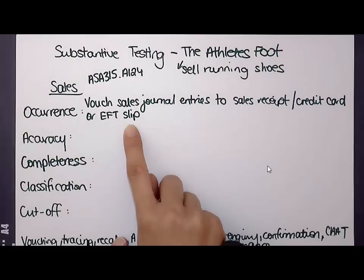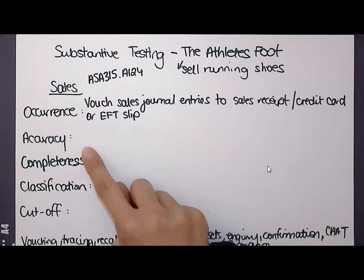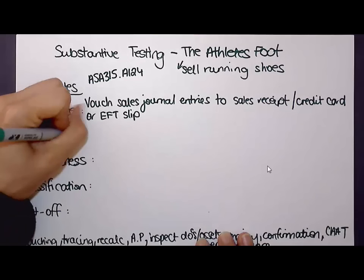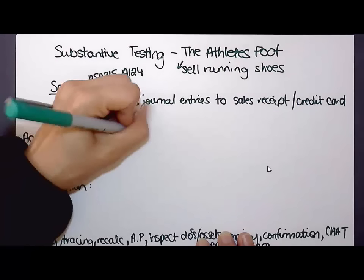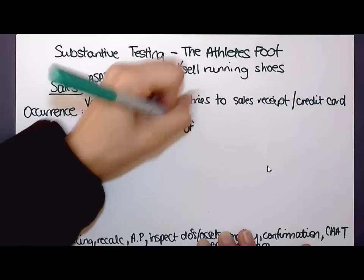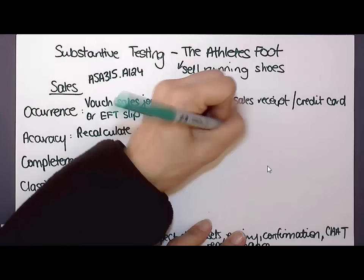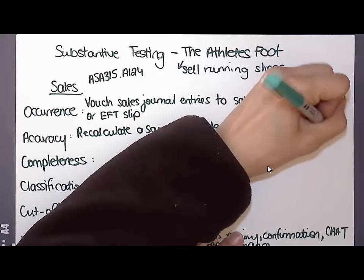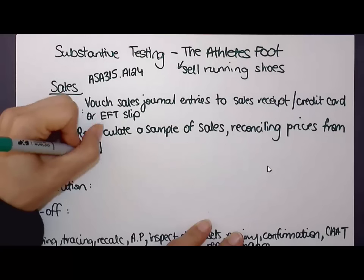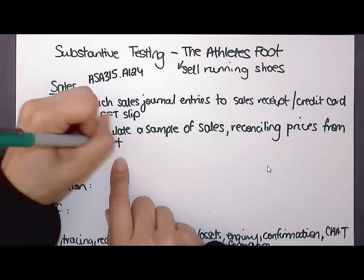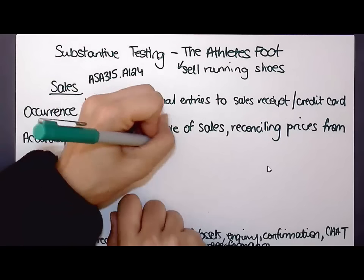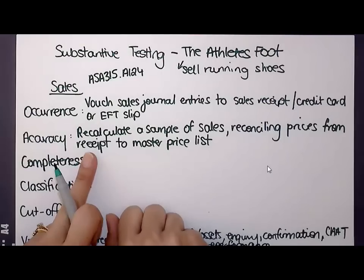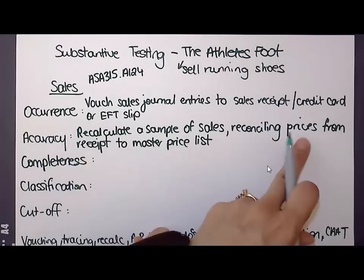Now for accuracy, I can use that same sample but I will need to recalculate a sample of sales, reconciling prices from the receipt to some sort of master price list. I'm going to assume there is a barcode scanning system — you scan a barcode on a shoe and it gives you the price — so I'll reconcile prices from the receipt to the master price list.